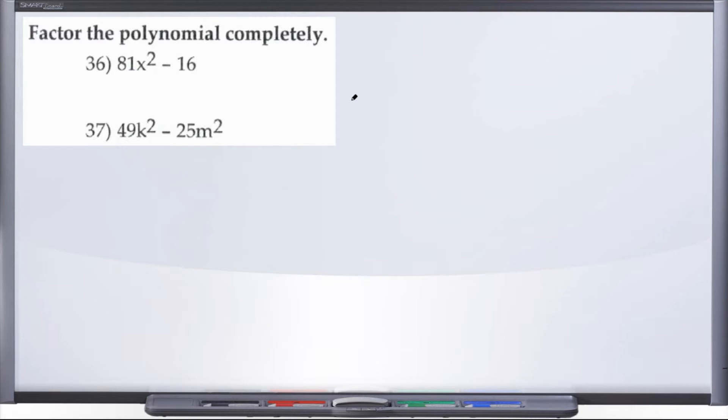All right, we finally made it to the back page and we're now in a new section. So factor the polynomial completely will be the directions for the next several videos that we go through. Taking a look here at problem 36, we've been given 81x² minus 16. We're still factoring, so we want to ask ourselves those two vital questions: is there a GCF and how many terms are there? If we take a look here at 36, we don't see a GCF.